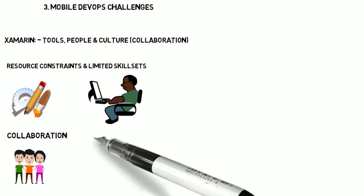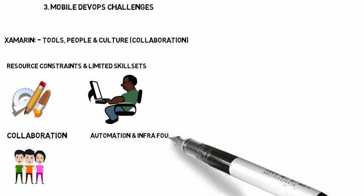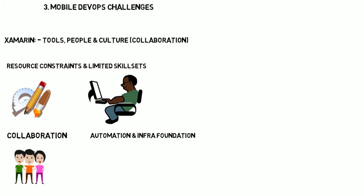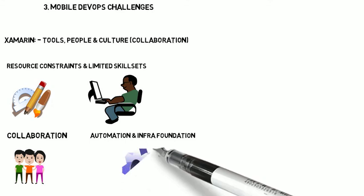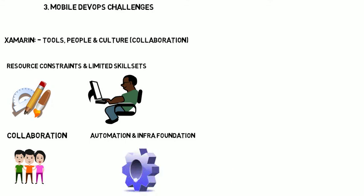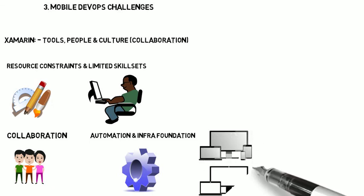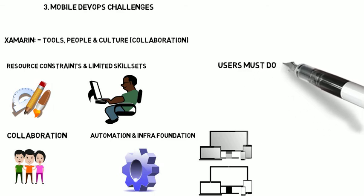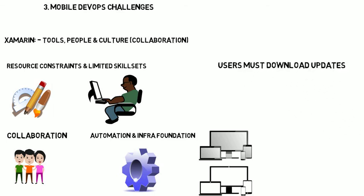Automation and infrastructure foundation is another challenge. Yes, we have servers, but now we also have multiple mobile devices, multiple form factors, multiple vendors, and constant updates to those devices and their operating systems. There's a lot in terms of infrastructure and foundation to deal with. Not to mention, as noted earlier, users have to download the updates — and users may not always download those updates when they should.